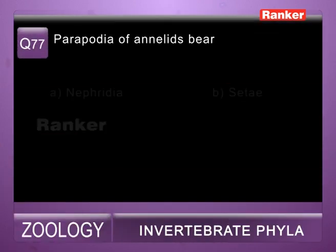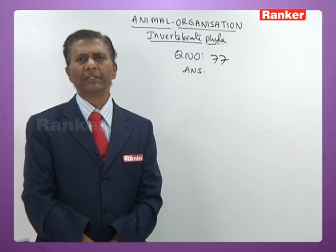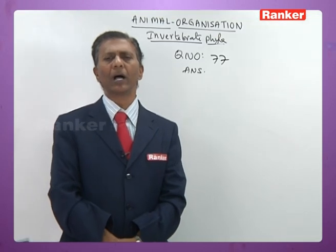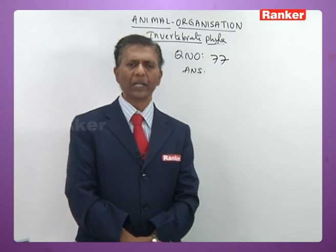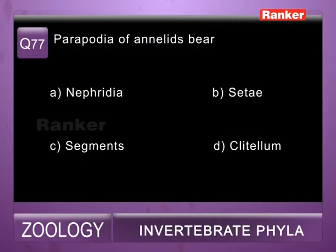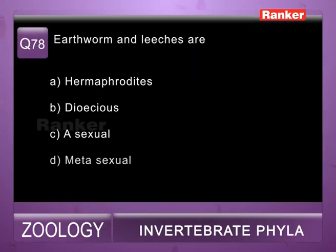Question seventy-seven: parapodia of annelids bear — a) nephridia, b) setae, c) segments, d) clitellum. Within the parapodia, setae are embedded in polychaetes. So the answer for seventy-seventh question is b) setae.